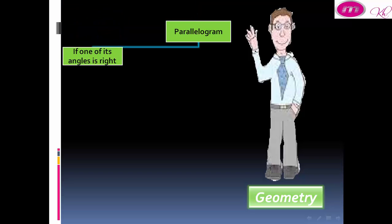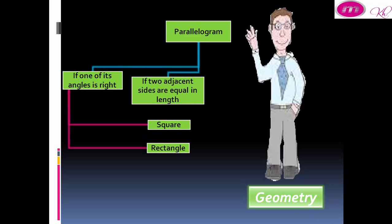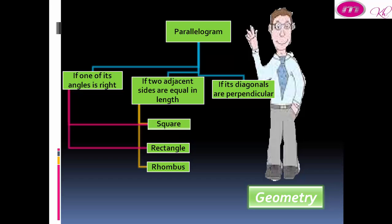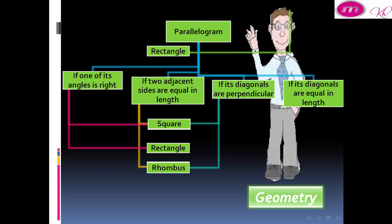When a parallelogram has one of its angles become right, it will become square or rectangle. If it has two adjacent sides equal in length, it will be square or rhombus. If its diagonals are perpendicular, it will be square or rhombus. If its diagonals are equal in length, it will be rectangle or square.